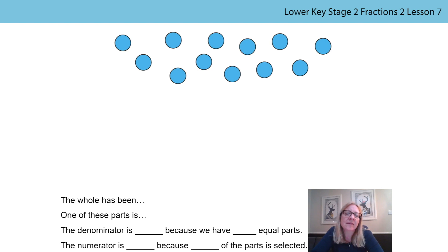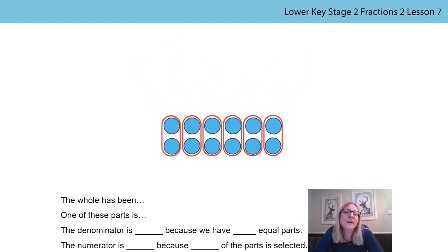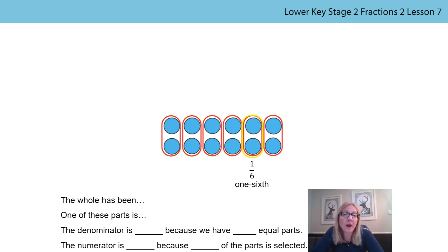Now let's think. What's the next number of groups that I could try? Six. Can I create six equal parts? Can we divide twelve counters into six equal parts? If you know the answer already say it out loud and then pause the video and try it with your twelve items. The whole has been divided into six equal parts. One of these parts is one sixth of the whole. Each of these equal parts represents one sixth of the whole. The denominator is six because we have six equal parts. The numerator is one because one of these parts is selected.